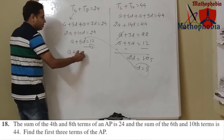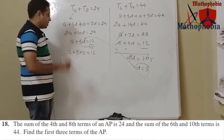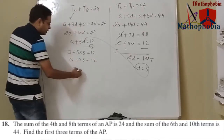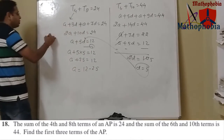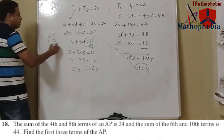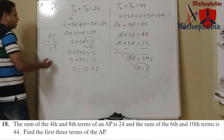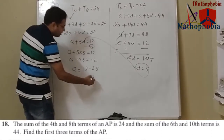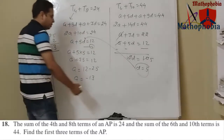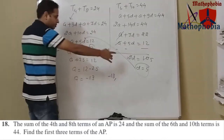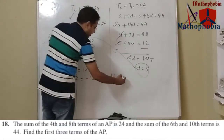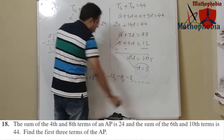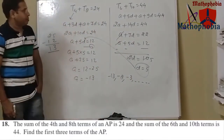Substituting d = 5 into equation 1: a + 25 = 12, so a = -13. Therefore the arithmetic progression is -13, -8, -3, and so on. This is our required arithmetic progression.